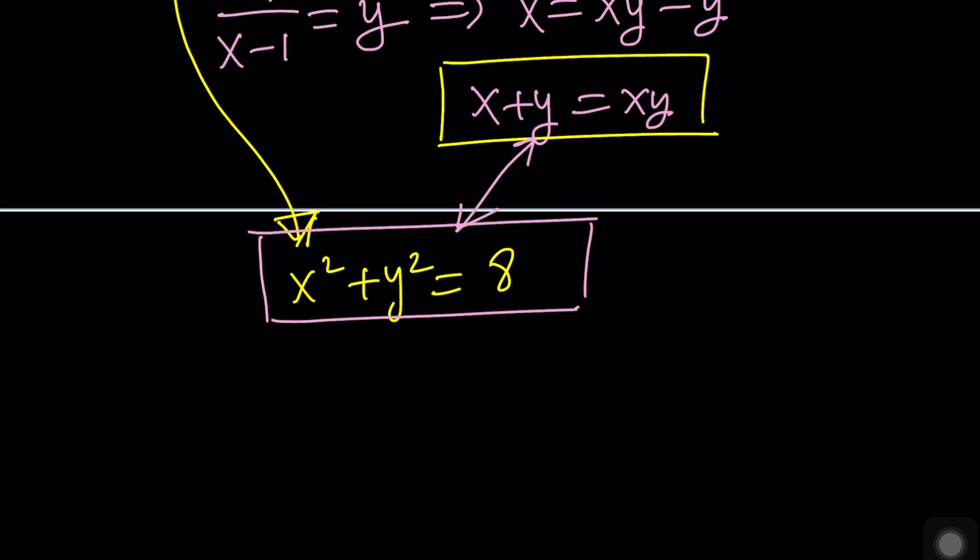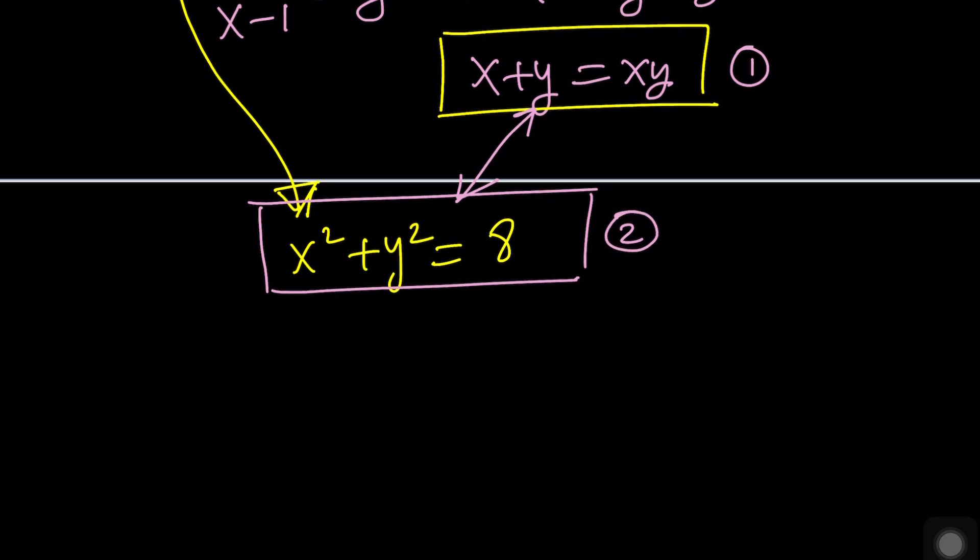And here's what we're going to do. Given the first equation contains X plus Y and XY, we're going to try to write the second equation using those as our tools. They're going to be the building blocks, basically. Make sense? Yes? Okay.